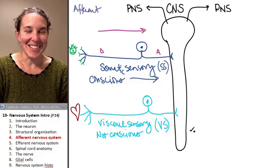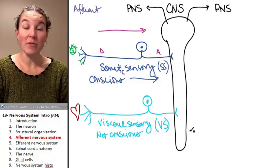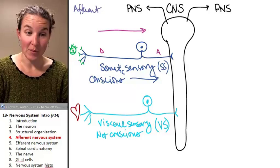So that is your conscious sensory information coming in. I think that's everything you need to know about the afferent nervous system. Shall we do the different flavors of the efferent nervous system? Why not?